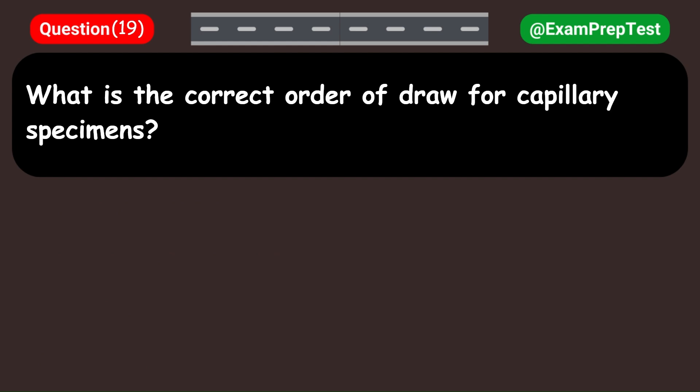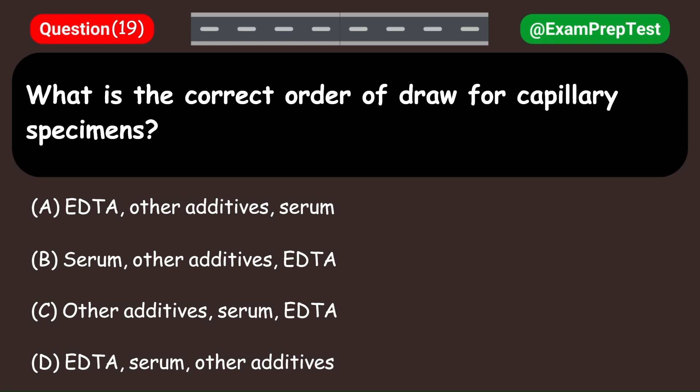What is the correct order of draw for capillary specimens? A. EDTA, Other additives, serum. B. Serum, Other additives, EDTA. C. Other additives, serum, EDTA. D. EDTA, serum, Other additives. Answer: A. EDTA, Other additives, serum.